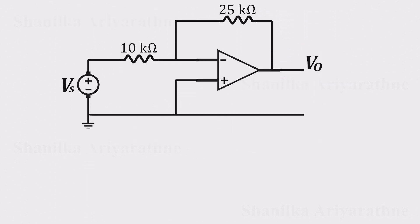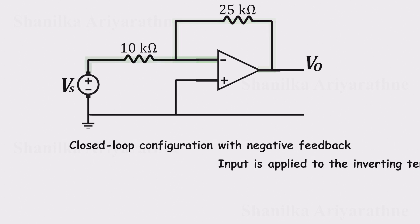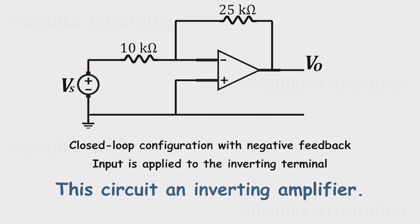This is a classic op-amp setup. The circuit uses negative feedback, and the input is applied to the inverting terminal, the one with the minus sign. So this is an inverting amplifier.